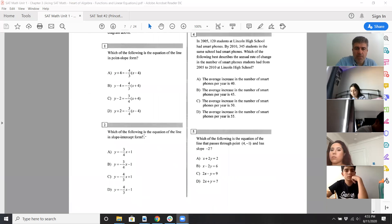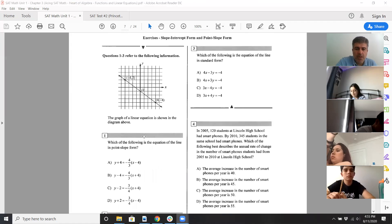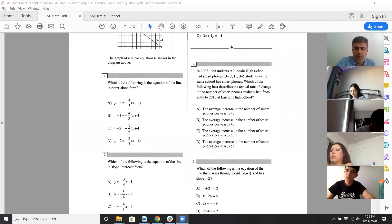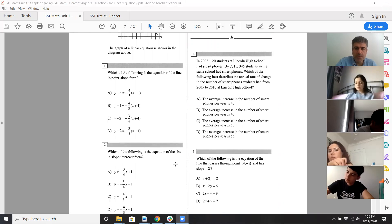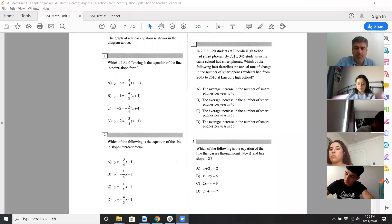So looks like there are five questions here. I'll do four and five with you guys, and then one, two, three, which I'll deal with this graph here. I'll just let you guys do your breakout rooms. So for number four, they say in 2005, 120 students at Lincoln High School had a smartphone. Five years later, in 2010, 345 students now had an iPhone or smartphone, could be Droid, right?